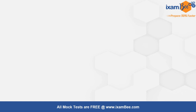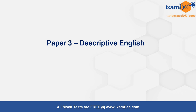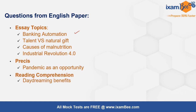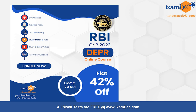Those were the 10 questions in the descriptive Economics exam. The descriptive English paper happened in the second half of the day. There were four essay topics: banking automation, talent versus natural gift, causes of malnutrition, and Industrial Revolution 4.0 — choose one. The next question was a précis where the theme was 'pandemic as an opportunity.' Finally, there was a reading comprehension passage on day-treatment benefits with several questions to answer.